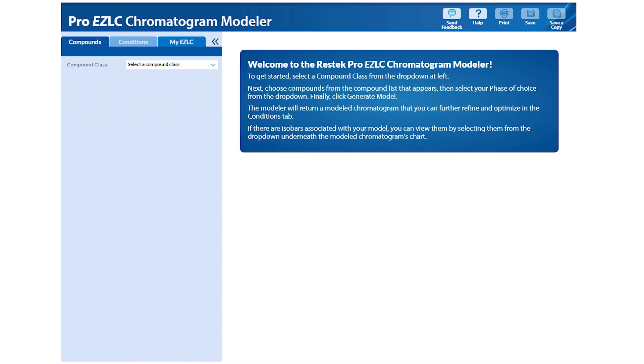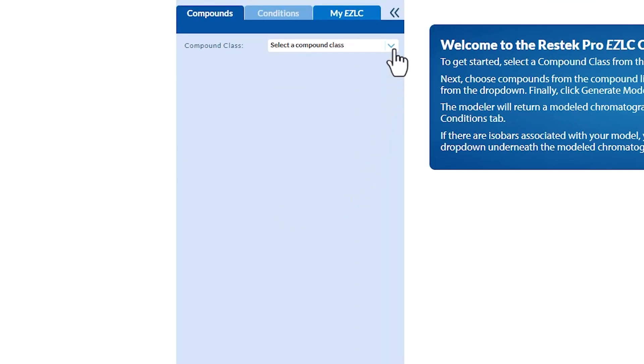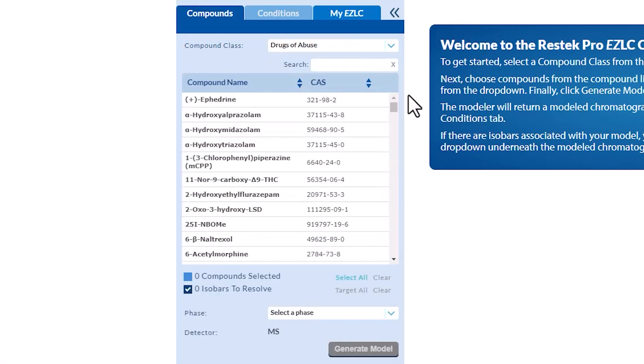When you first access the Pro-Easy LC Modeler, you will start in the Compounds tab. You can choose from specific libraries of the compounds that have been developed by the expert chromatographers here at Restek. In this demonstration, we're going to select the Drugs of Abuse library. A table of compounds will now appear.